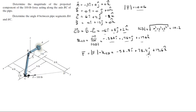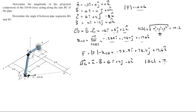Now that you have the Cartesian vector form of the force, you can find the projected value along BC, but first we need to find the unit vector for BC — this tiny vector right here. The BC vector is C minus B, which comes out to be 6i plus 4j minus 2k. The magnitude of this vector is 7.483. The unit vector BC is found by dividing vector BC by its magnitude, and it comes out to be 0.802i plus 0.534j minus 0.267k.